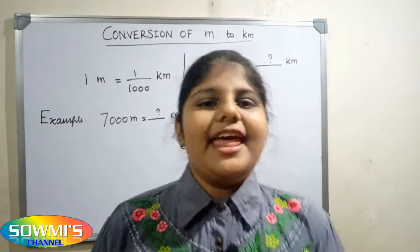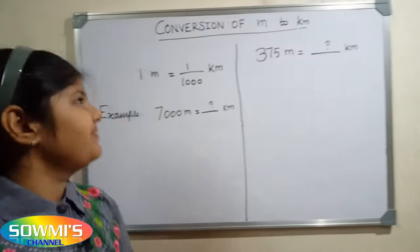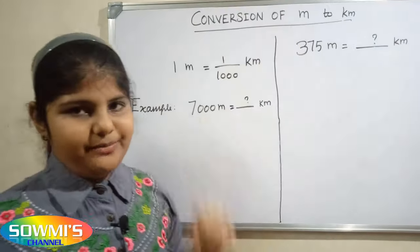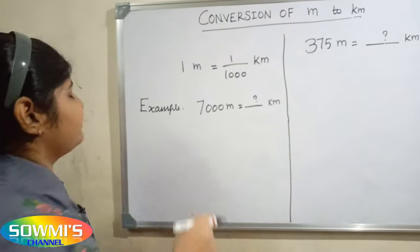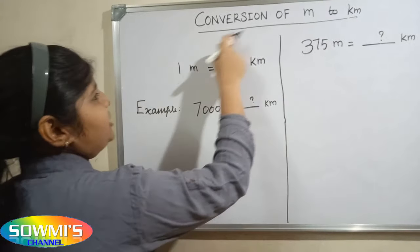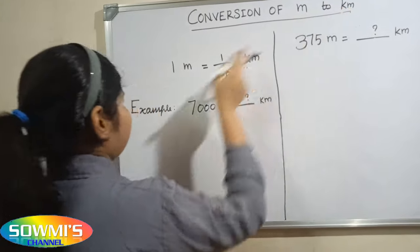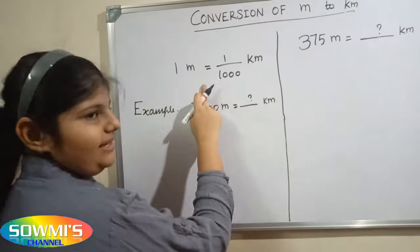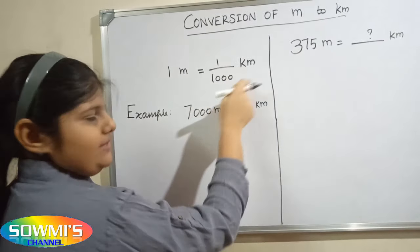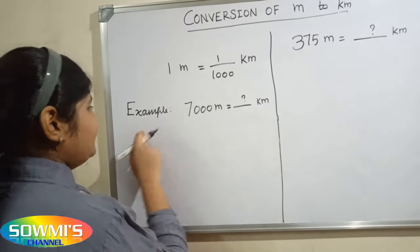Hi friends, in this video we are going to see how to convert meters into kilometers. The formula for conversion of meters into kilometers is: one meter is equal to one divided by one thousand kilometers.